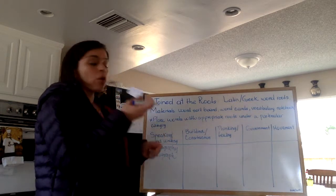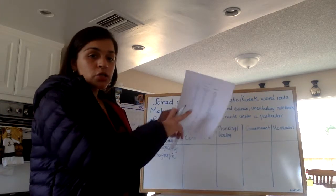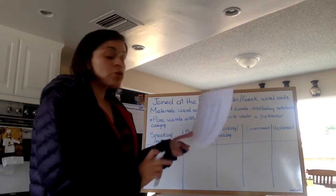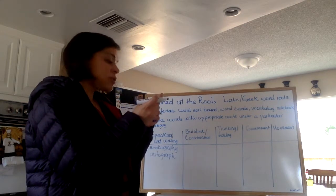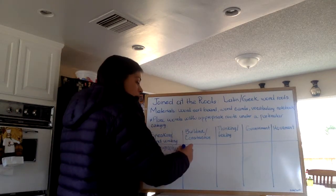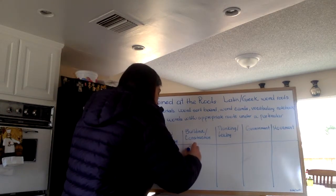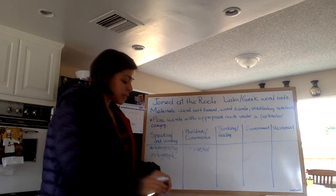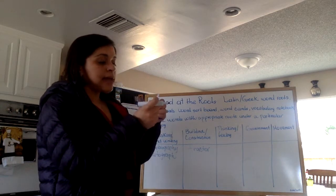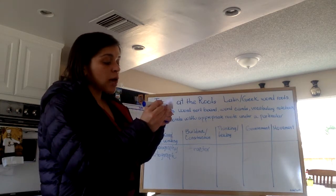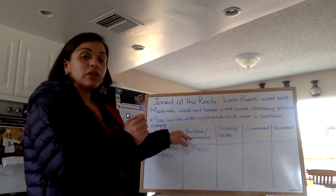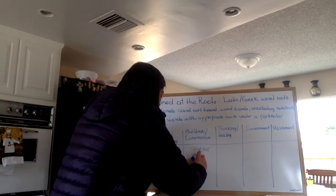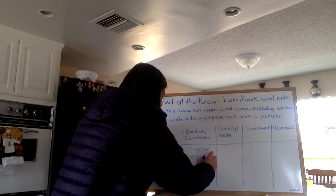Now I have the word 'tractor.' I would go back to my list — the root 'tract' means 'to pull.' The word 'tractor' would probably go well under the building and construction category, and I would write it there. Here's another word, 'attraction' — it has the same root 'tract,' so it falls within that category as well.